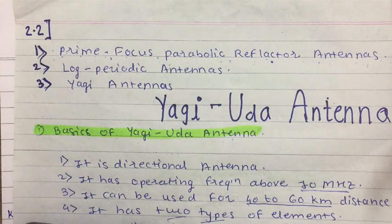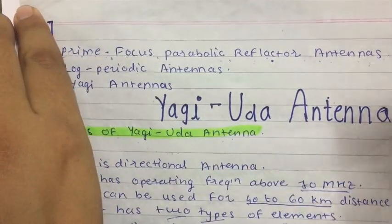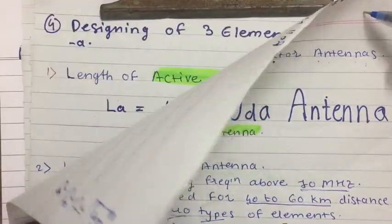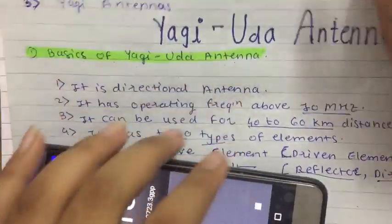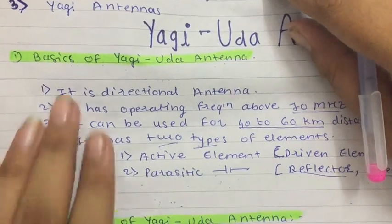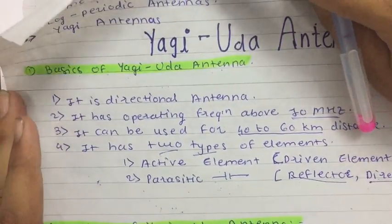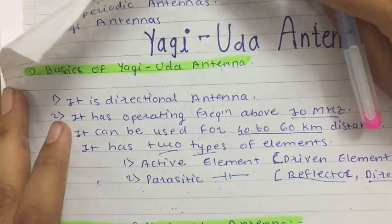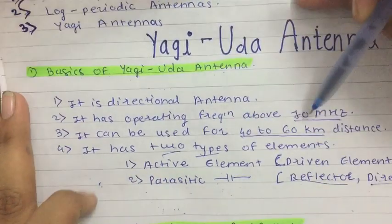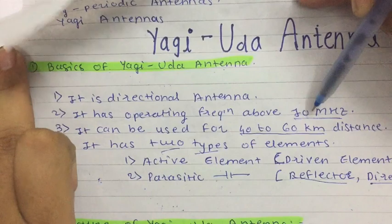Today I am telling you about Yagi-Uda antenna, log periodic antennas, and prime focus parabolic reflector antennas. First we see basics of Yagi-Uda antenna. It is a directional antenna, so its directivity is maximum in some direction. It has an operating frequency of about 10 MHz, though it can be made below 10 MHz. It can be used for communication over a range of 40 to 60 kilometers.